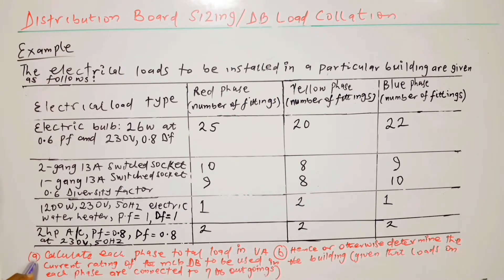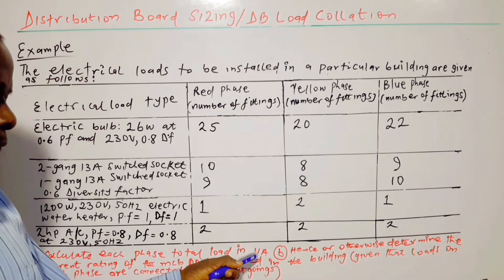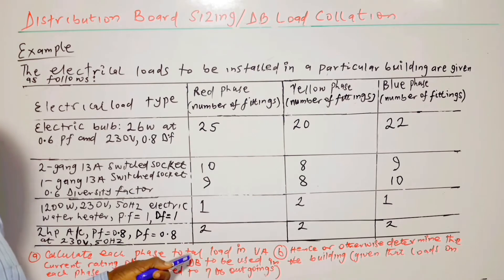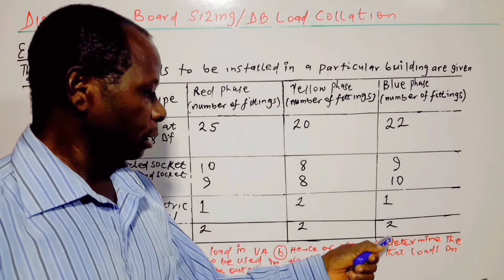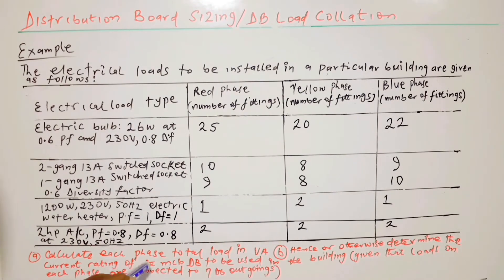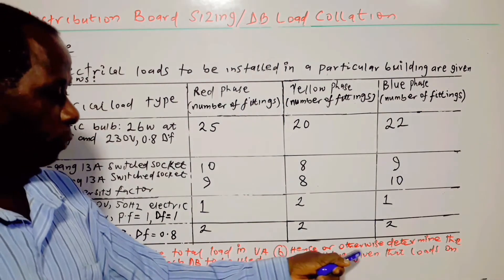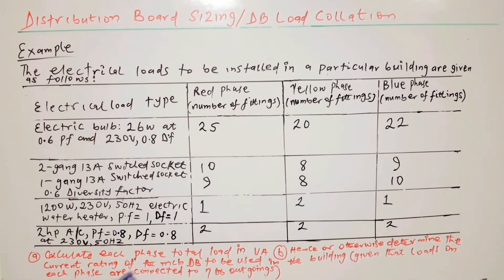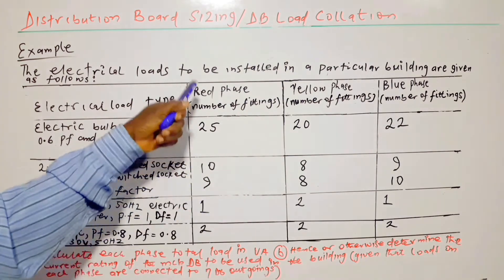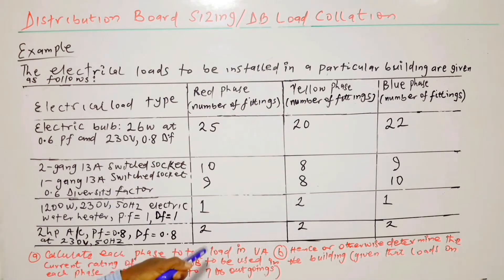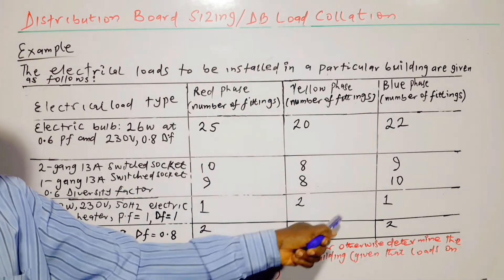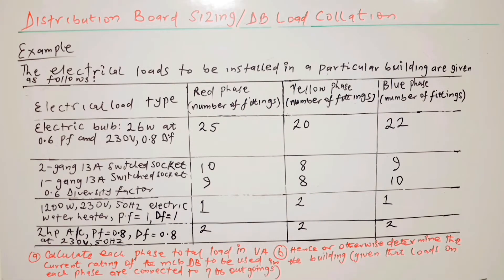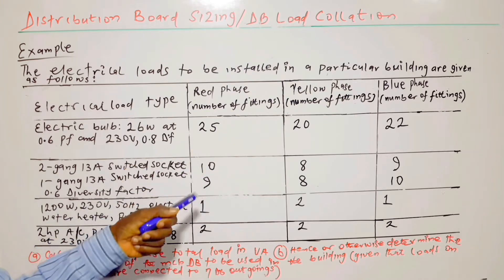Now the questions. Part A: calculate each phase total load in VA — that is the apparent power S on each phase. Part B — hence or otherwise — determine the current rating of the miniature circuit breaker distribution board (MCB DB) to be used in the building. Given that loads on each phase are connected to 7 DB outgoings — 7 for red, 7 for yellow, 7 for blue — giving a total of 21. This is a 3-phase distribution board.